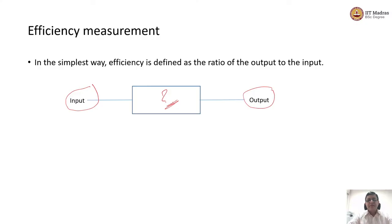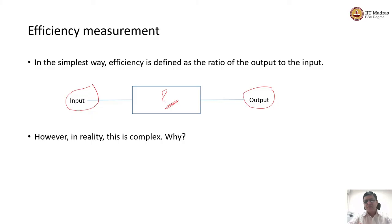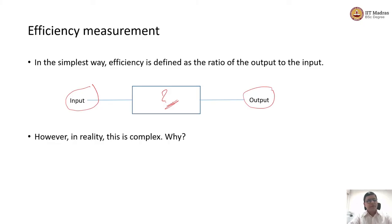If efficiency is the ratio of output versus input, why do we need a separate session on this? Why is it so complex to calculate and measure efficiency, and to compare one economic unit saying it has higher efficiency than another? Why is it so complex?